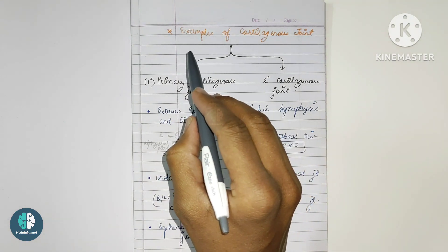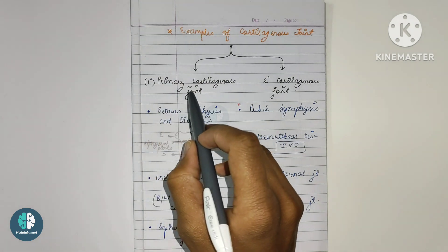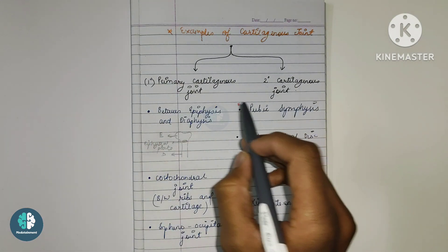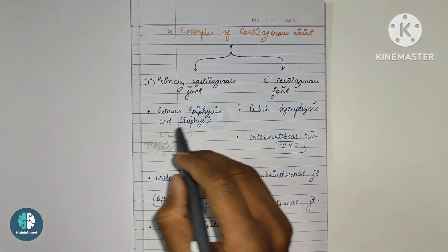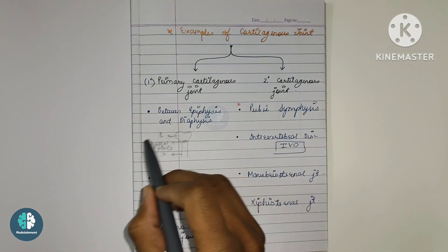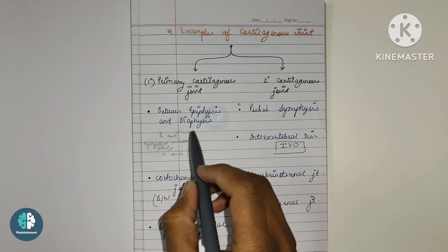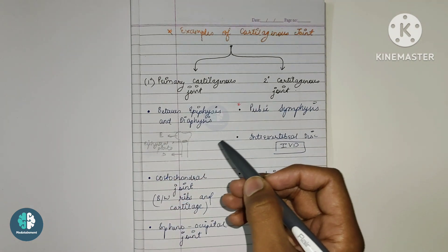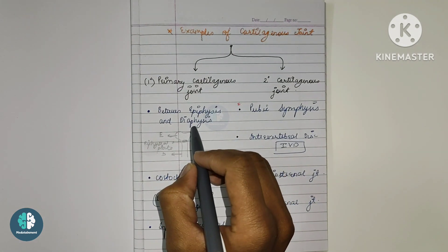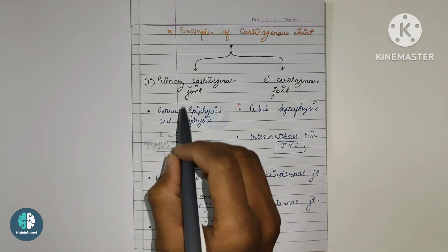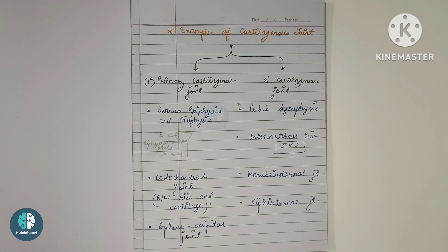Let's discuss the examples of cartilaginous joints. For the primary cartilaginous joint, the first example is the epiphysial plate, which is located between the epiphysis and the diaphysis. The diaphysis is the shaft part of the bone. Between the epiphysis and the diaphysis, we have this epiphysial plate which forms the primary cartilaginous joint, as you can see in the picture.